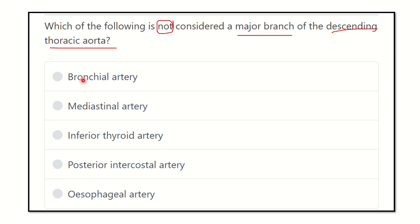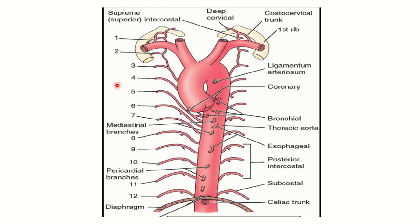The options are: bronchial artery, mediastinal artery, inferior thyroid artery, posterior intercostal artery, and esophageal artery. We have to find out which one of these is not a branch of the descending thoracic aorta.